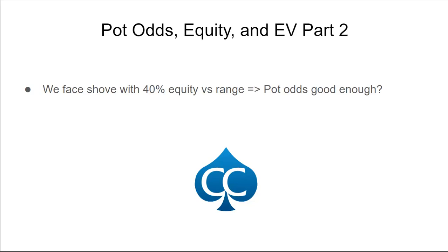Pot odds, equity, and EV are very related. As an example, let's say that somebody shoves on us — they move all in — and we think that we have 40% equity versus our opponent's range. We can calculate equity versus range with a program like Equilab. Then we can ask: are the pot odds that we're getting good enough? If we have 40% equity, that means 40% of the time we're going to win, and the majority of the time we're going to lose. But if we're getting good enough pot odds, we should go ahead and make that call. Looking at the table in this chapter, three to two pot odds — for example, the pot is 150 and it costs us 100 to call — are going to be just good enough to make a call when we have 40% equity against our opponent's range.